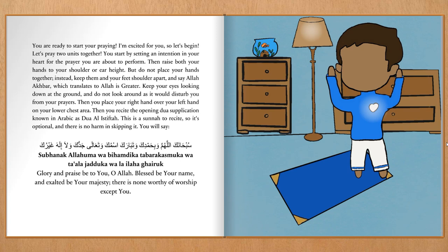Let's pray two units together. You place your right hand over your left hand on your lower chest area. Then you recite the opening dua supplication, known in Arabic as Dua al-Istiftah. This is a sunnah to recite, so it's optional, and there is no harm in skipping it. You will say: Subhanak Allahumma wa bihamdik, wa tabarak asmuk, wa ta'ala jadduk, wa la ilaha ghayruk.